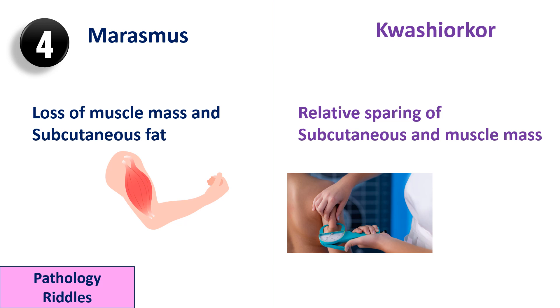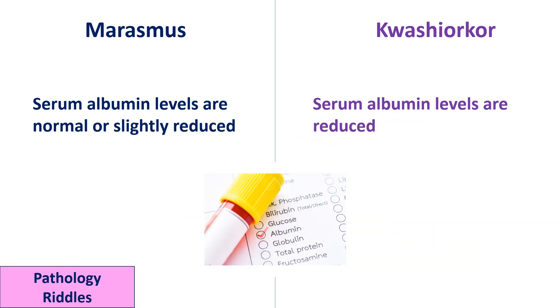In marasmus there is loss of muscle mass and subcutaneous fat, whereas in kwashiorkor there is relative sparing of subcutaneous fat and muscle mass. In marasmus, the serum albumin levels are normal or slightly reduced.